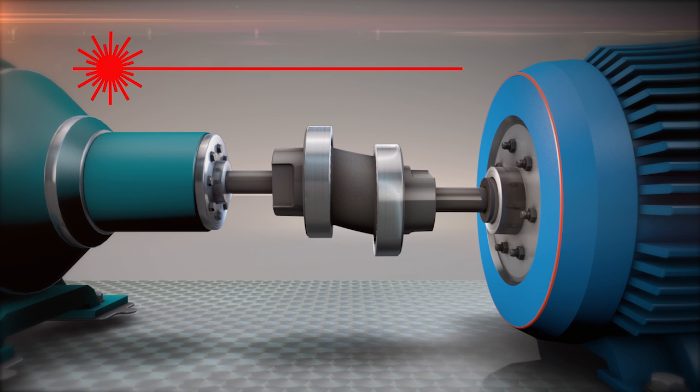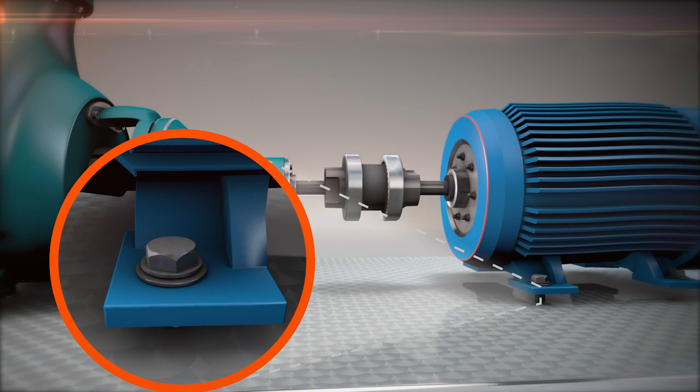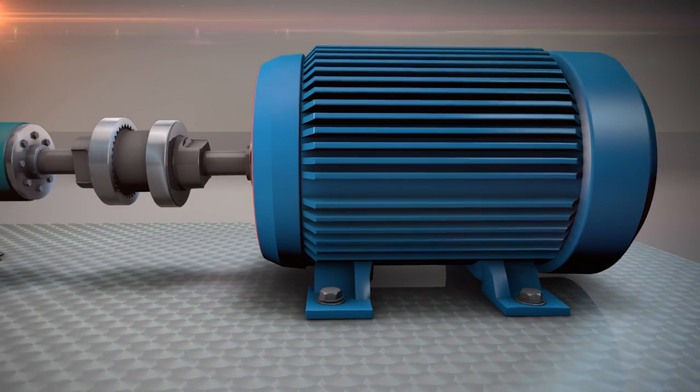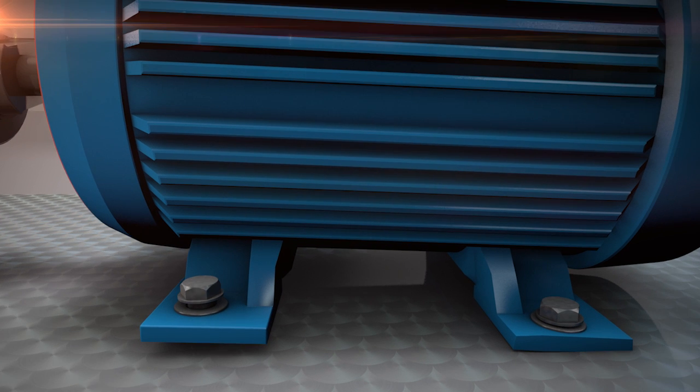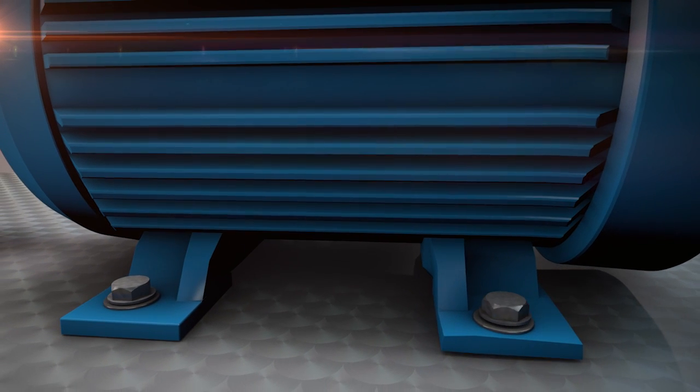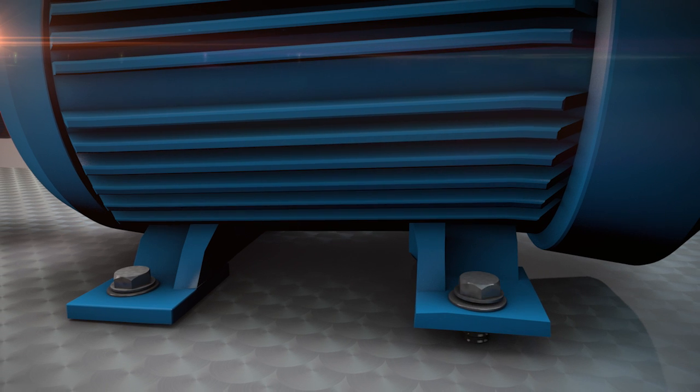To determine which type of soft foot a machine has, we can use laser alignment systems to measure the amount of movement a soft foot produces at the shaft centerline when loosening or tightening a foot. The combination of movement the machine exhibits upon tightening or loosening each of the anchor bolts helps us to diagnose the problem and therefore find the correct solution for it.